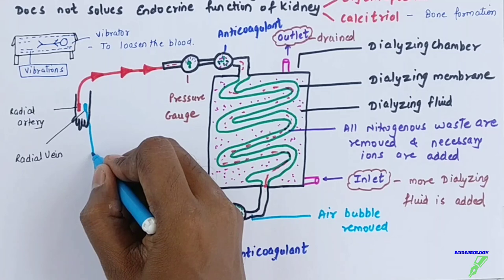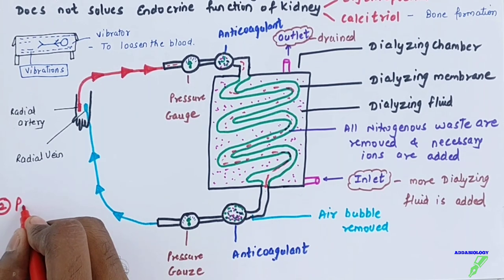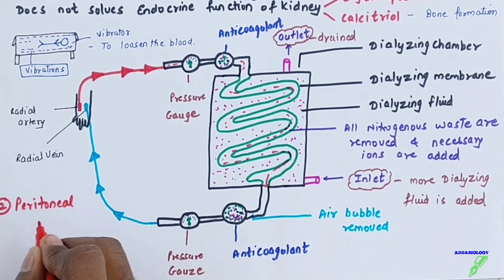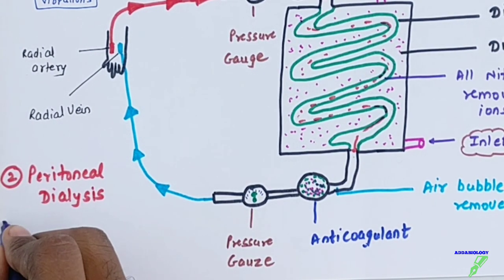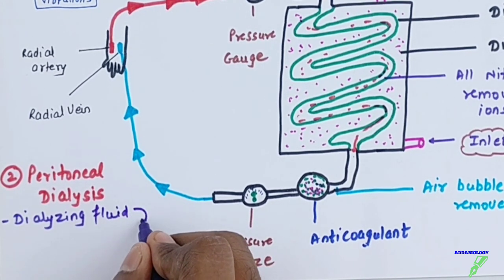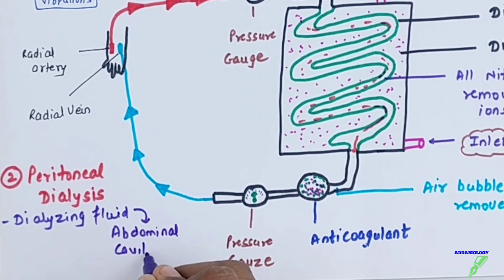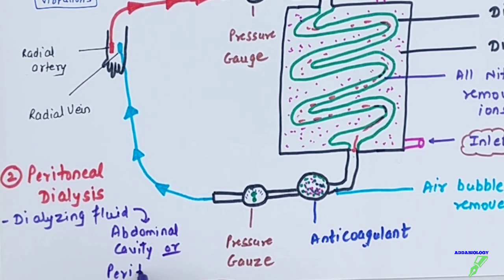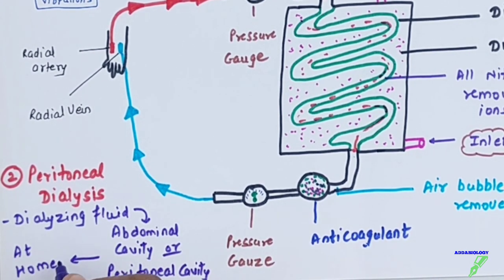Dialysis will be continued until the patient finds a donor, since it is not a permanent solution for kidney failure. There is another type called peritoneal dialysis — a very easy method where the patient can get dialysis done at home. The dialyzing fluid is introduced into the peritoneal cavity, and the peritoneal membrane acts as a semi-permeable membrane that drains all nitrogenous waste into the dialyzing fluid.